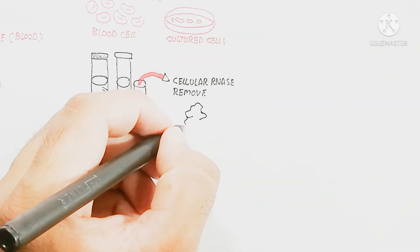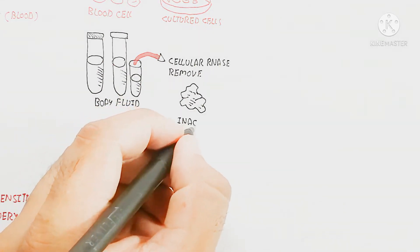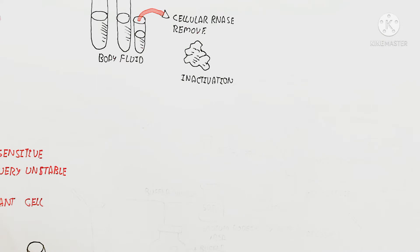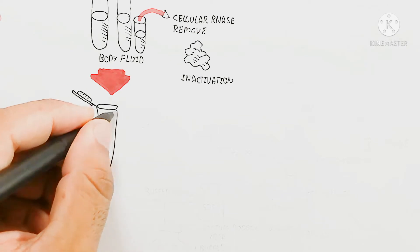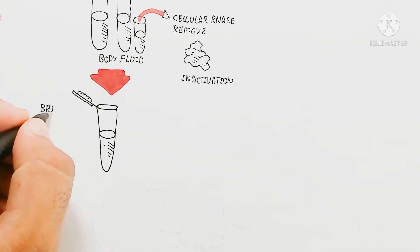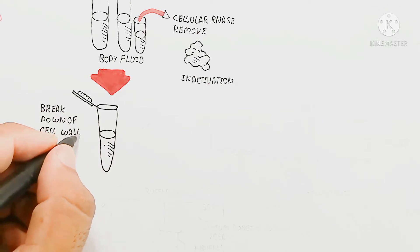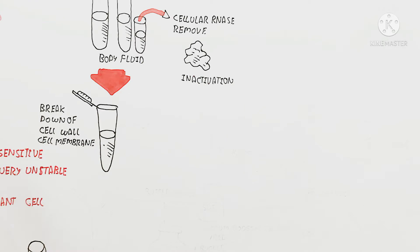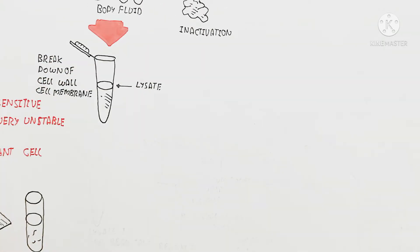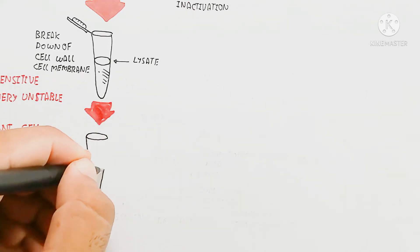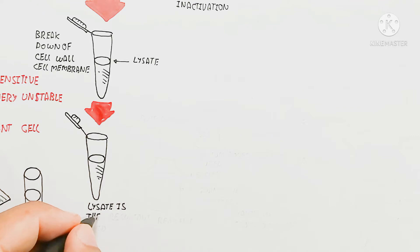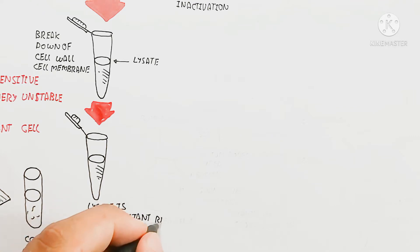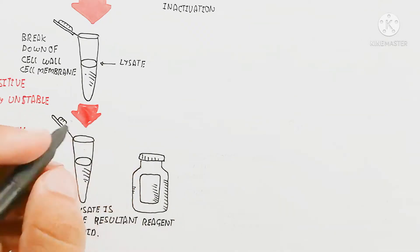Inactivation or removal of cellular RNases is essential. The next step is the breakdown of the cell membrane and cell wall by different reagents to create a lysate. After breakdown of the cell membrane and cell wall, the resultant fluid is called the lysate.